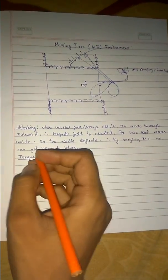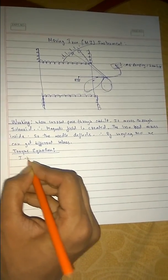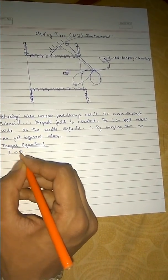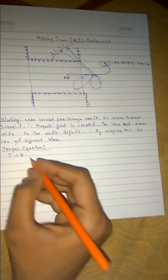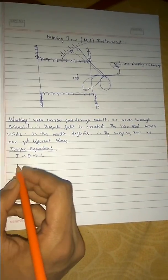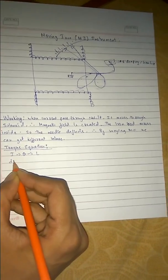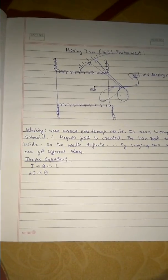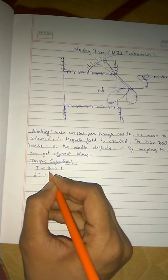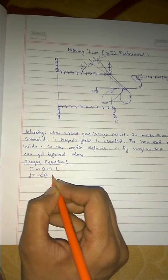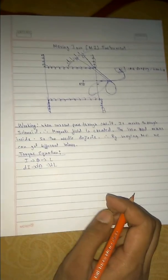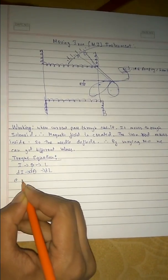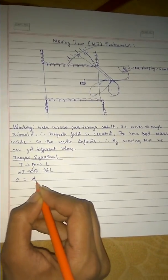Now the torque equation - it is an easy torque equation. As current is given, some deflection takes place with angle theta. The pointer moves with angle theta because of the inductance L. In the initial condition, the change taking place in the current leads to a change in the angle.